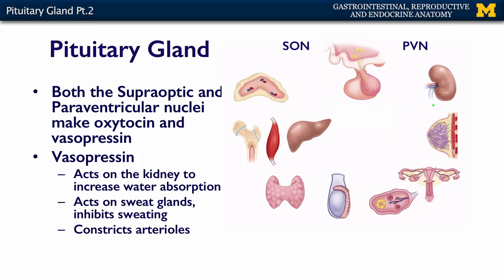Vasopressin, or anti-diuretic hormone, acts on the kidney. Diuresis is losing fluid, and your kidneys help regulate your fluid balance. Vasopressin acts on the kidney to increase water absorption — hence anti-diuretic hormone. It also acts on your sweat glands to decrease sweating and inhibit perspiration. Additionally, it contributes to constricting your arterioles, making vasopressin another way of thinking about increasing blood pressure.